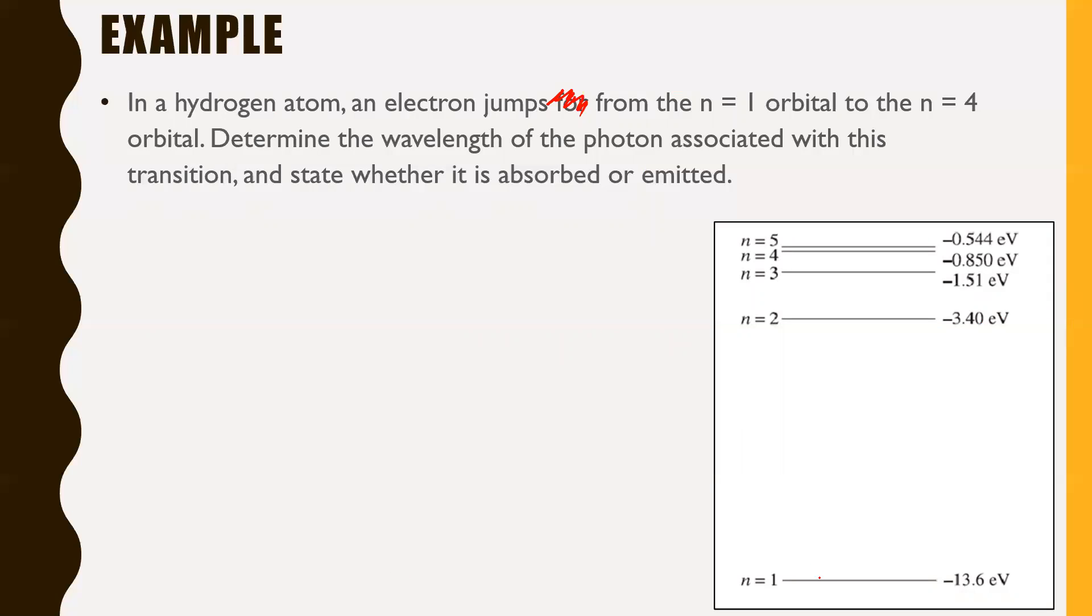Okay, so first things first, because we're going from n is one to n is four, that means we're going up this way, right? That tells you right now that this increase in energy must have come from somewhere. So a photon must have come in and been absorbed. So I'll even circle that right now. It must have been absorbed for that to occur.